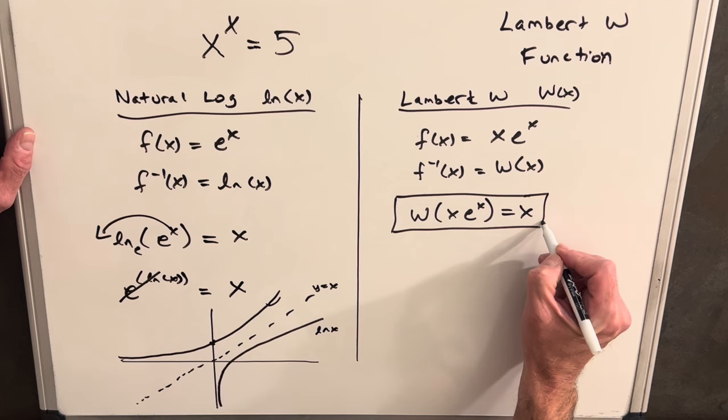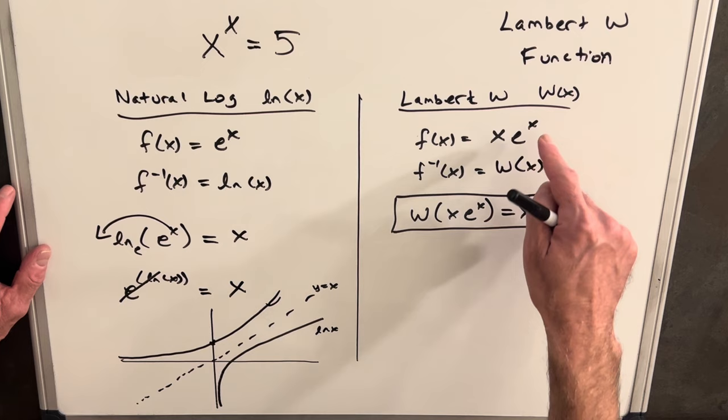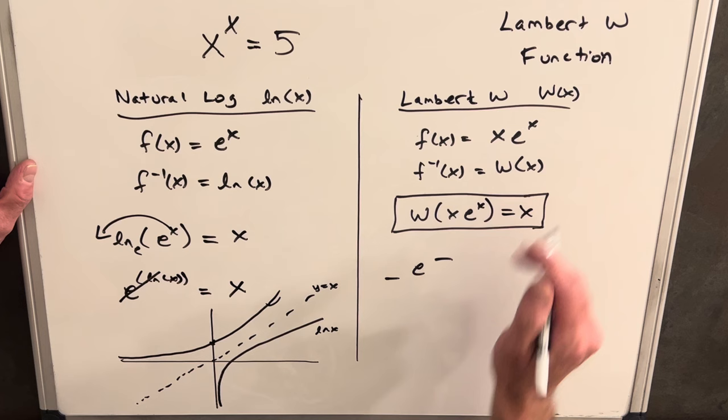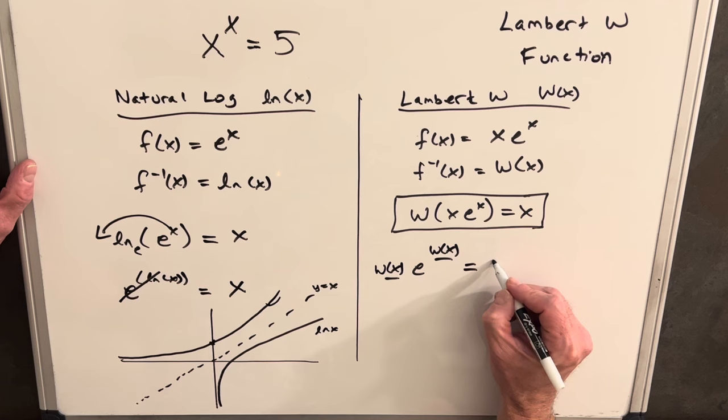But then also we should have something like this right, we should be able to do it the other way and take our function and plug the inverses in and get back x as well. So that would mean instead of having our x's here we're going to plug in Lambert W here, Lambert W here, and this will give back x as well. So this is also very useful.